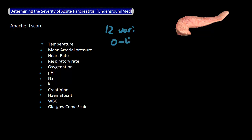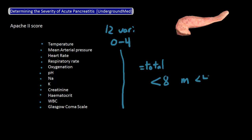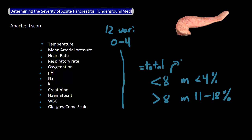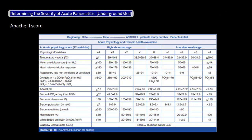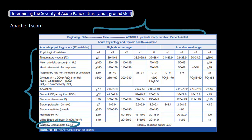For each of these 12 variables, you get a score between 0 and 4 that is dependent on certain defined metrics. Add up all the scores for all the variables and you get your total. A total score less than 8 has an estimated mortality of less than 4%, while a score above 8 has an estimated mortality between 11 and 18%. A total score under 8 is probably not severe pancreatitis, while a score above 8 might be severe pancreatitis. I'm just going to quickly show you what this looks like — here are the 12 variables and how to score them from 0 to 4. Note that the score for the Glasgow Coma Scale is a little bit different. While this criteria has the most evidence behind it, you can see that it is extremely cumbersome to do, and so isn't used very often.